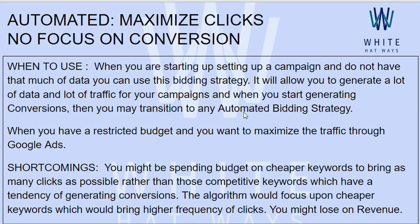The shortcoming of this particular bidding strategy is that in the process of gaining maximum clicks, Google might focus upon those keywords which are low cost or cheap keywords that might not result in conversions. The main focus is maximum number of clicks rather than conversions. Google will try to gain as many clicks under your budget and may focus on cheap keywords that are not conversion-related, so you might lose out on revenue. In the initial stages you can use it, but later on it is always advisable to switch to an automated bidding strategy.